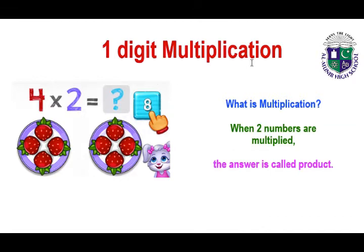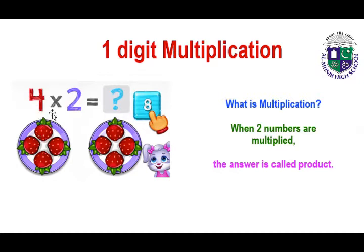One digit multiplication. What is multiplication? When two numbers are multiplied, the answer is called the product. Here you can see we have the same quantity of strawberries in two plates, and the question is four multiply by two, so we have to add two times four to get the answer.